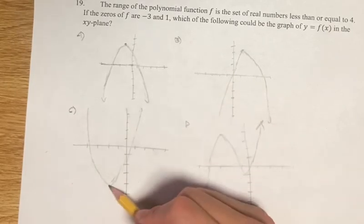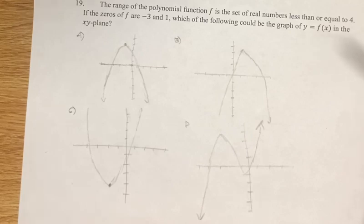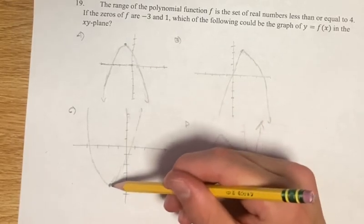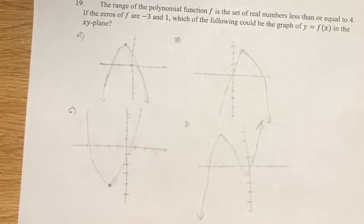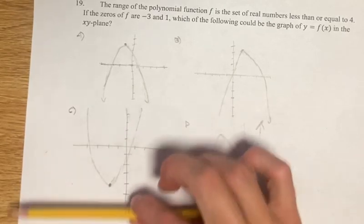For c, we have a minimum point. So that means our range is going to be this value, which looks like it's negative 4. And then all of our range is going to be that number and everything greater than or equal to it.